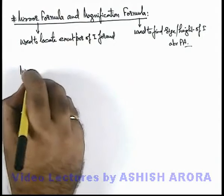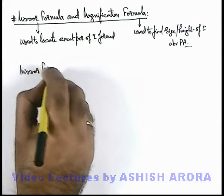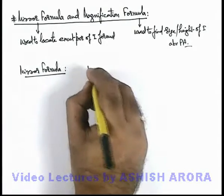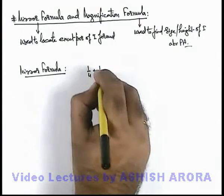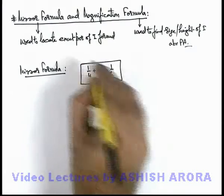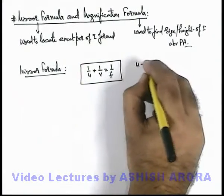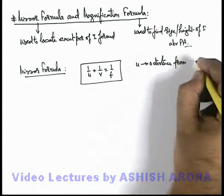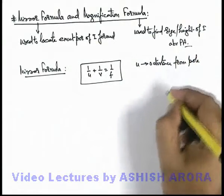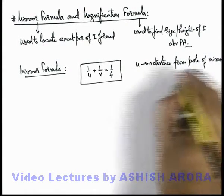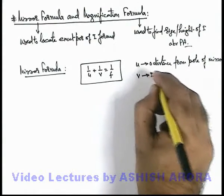Here, mirror formula is stated as: 1/u + 1/v = 1/f. Here in this situation, u is the object distance from pole of mirror, pole of spherical mirror which we are using. v is the image distance from pole of mirror.